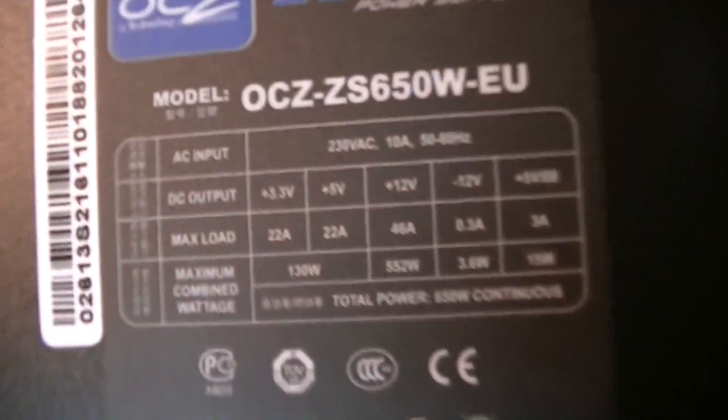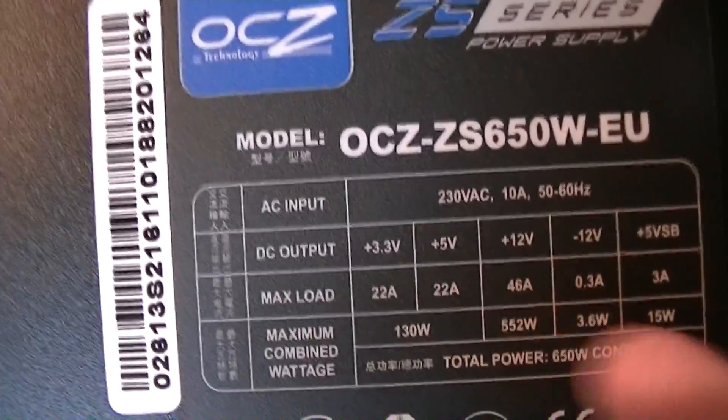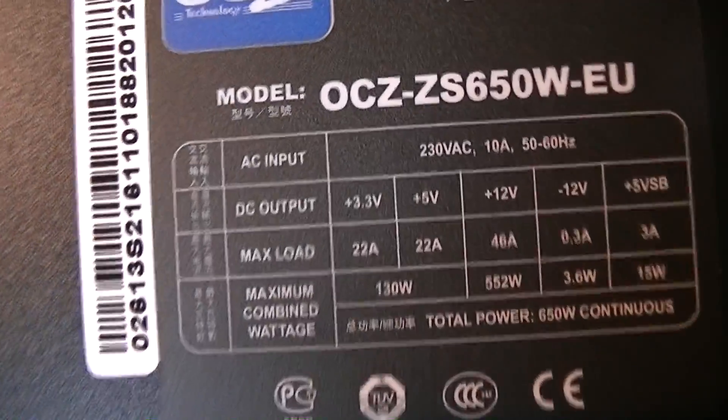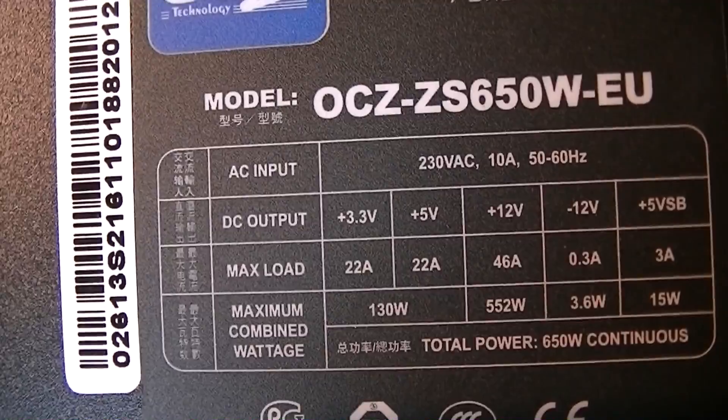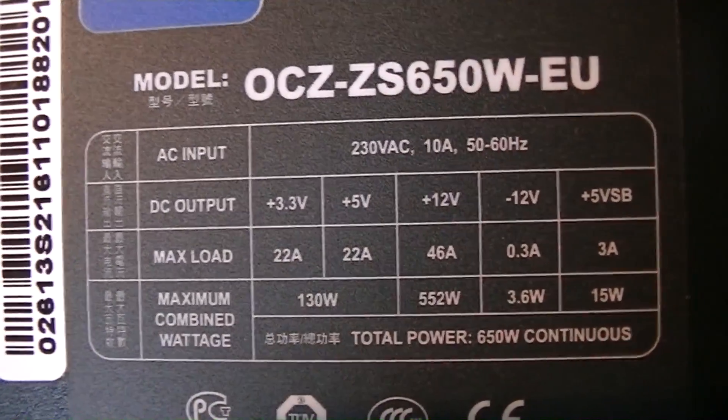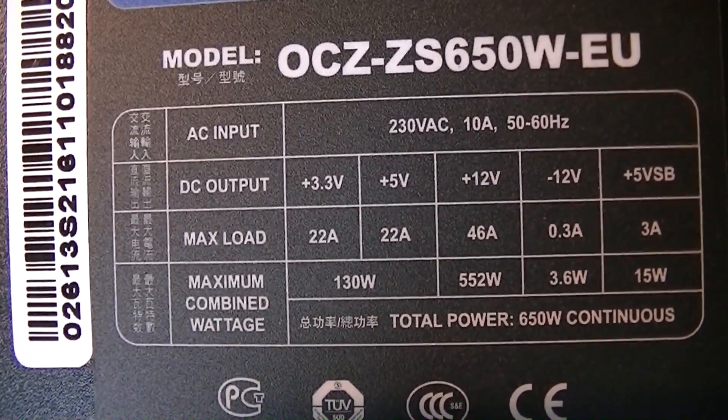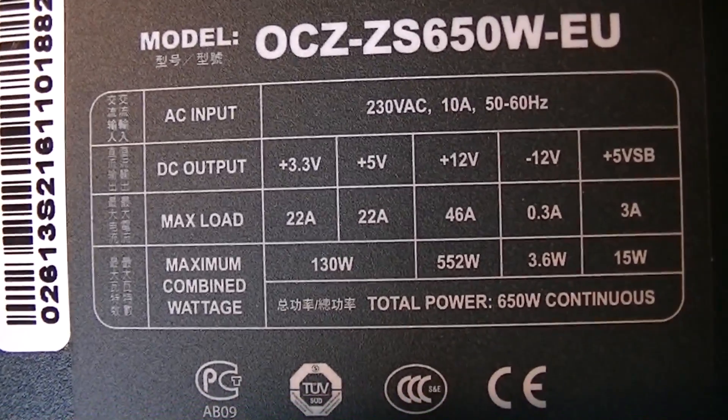Here are the specifications again. On the plus 12 volt rail you get 46 amps at max and 552 watts. On the plus 3.3 slash plus 5 volt rails you get 22 amps and 130 watts. So that seems pretty good and I can't complain especially when considering the price.